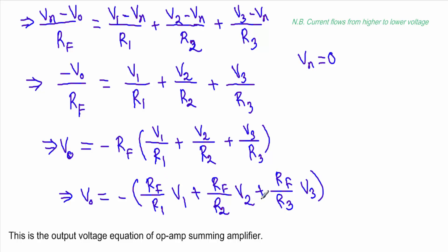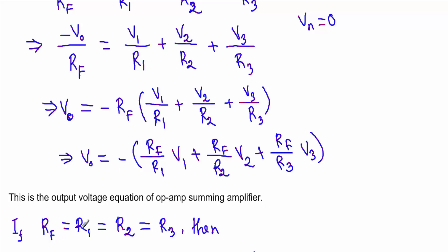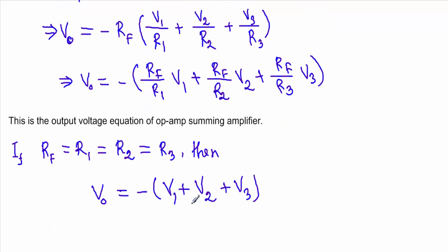Now if the feedback resistor Rf and resistors R1, R2, and R3 are all made equal, then the output voltage V0 equals minus (V1 plus V2 plus V3). So when all resistors are equal, the summing amplifier produces the simple sum of the input voltages. This is the operational amplifier summing amplifier, or summer circuit, or adder circuit. That's it, thank you.